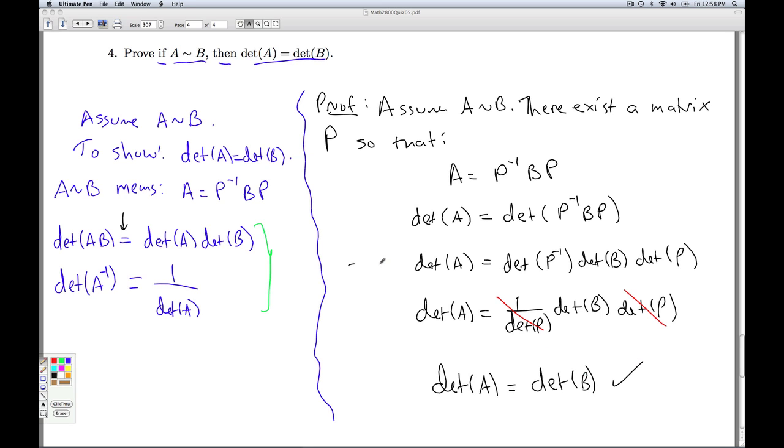Remember, once I get to this, all these quantities here are now real numbers. The determinant of A is a real number. The determinant of P inverse, determinant of B, determinant of P, all those determinants are real numbers and so I can just multiply them around and cancel them out as needs be. That'll do it then for number four and that'll do it then for quiz five.